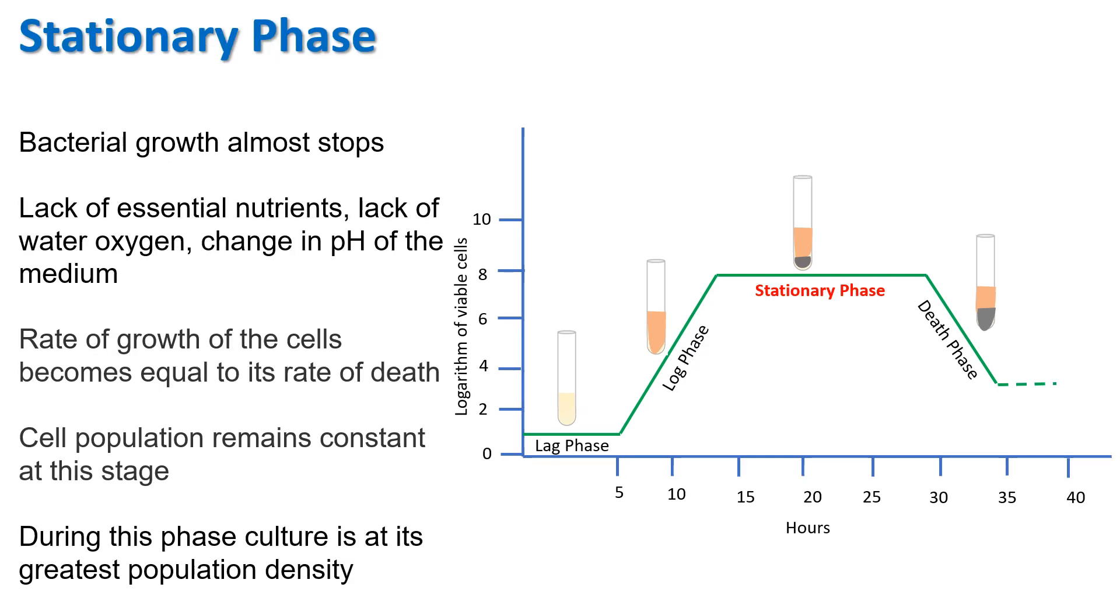Stationary phase: After log phase, the bacterial growth almost stops completely due to lack of essential nutrients, lack of water, oxygen, and change in the pH of the medium due to continuous consumption. At this time, the rate of growth of the cells becomes equal to its rate of death. So the cell population remains constant at this stage. Plotting this phase on the graph gives a smooth horizontal linear line. During this phase, culture is at its greatest population density.